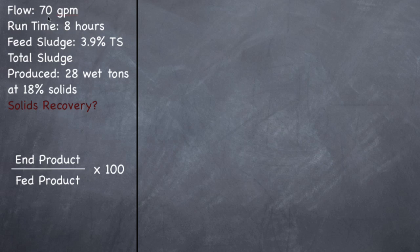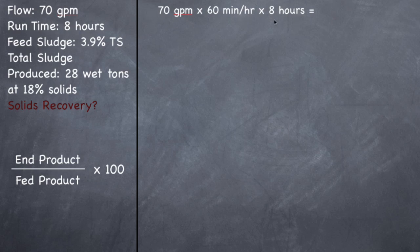Whenever you're doing pounds, you need MGD. This is gallons per minute, so 70 gallons per minute times 60 minutes in an hour gives you gallons per hour, and then it's run for 8 hours — that gives you the total gallons for that run time. So 70 times 60 times 8 gives you 33,600 gallons per day.